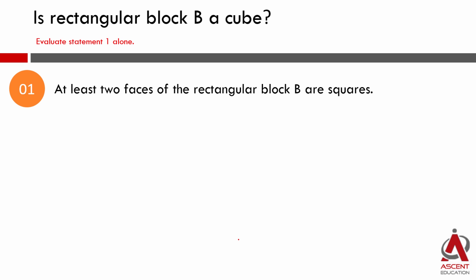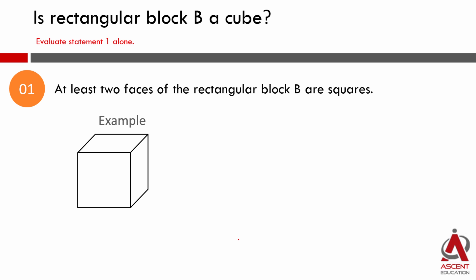Let's start with statement 1 alone. Statement 1 says at least two faces of the rectangular block B are squares. If you have a rectangular block, there are six faces. Let's draw a diagram — for example, a 4 by 4 by 4 cube. This is a square face, this is a square face, so at least two faces are squares, and this is indeed a cube because all three dimensions are the same: 4 by 4 by 4.